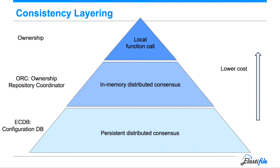The owner of the file can do all of its operations in memory. It doesn't need to talk to anyone in order to do it. Of course, if it's doing a change, it will need to persist the change. If it's doing a transaction, it might need to do so with another owner. But in general, all of its operations are local in memory. The ORC is an in-memory distributed consensus.